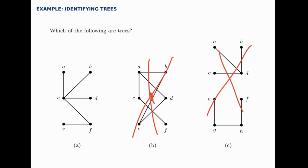You could also count the number of edges. And if there's one fewer edge than nodes, then you know that it's a tree as long as it's connected. So this one is a tree. The other two are not.